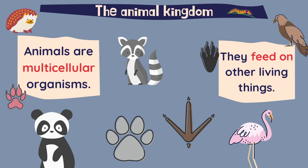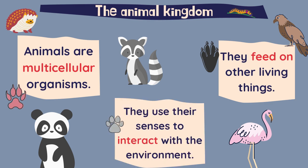And last, the animal kingdom. Animals are multicellular organisms. They feed on other living things — it could be other animals or living things from the plant kingdom. They use their senses to interact with the environment.